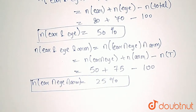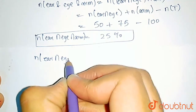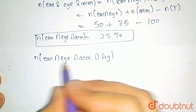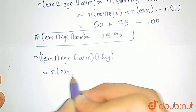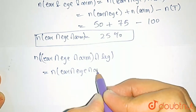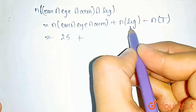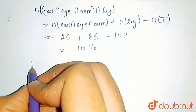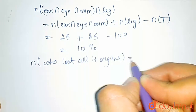Similarly, let us find number of people who lost ear, eye, arm and leg — that is, all four organs. Using the formula: N(ear intersection eye intersection arm) plus number who lost leg minus total = 25 + 85 - 100 = 10%. This implies the number of combatants who lost all four organs is equal to 10%.